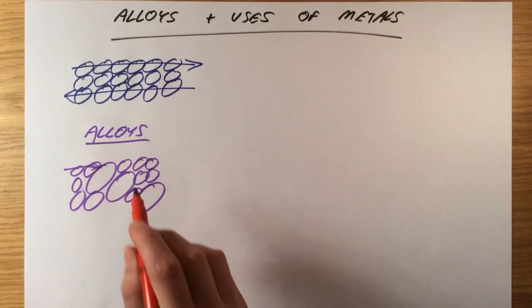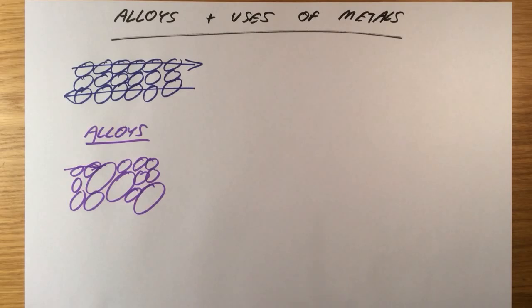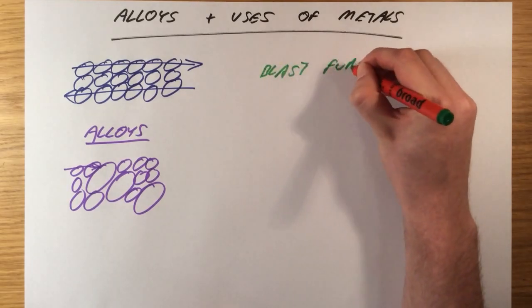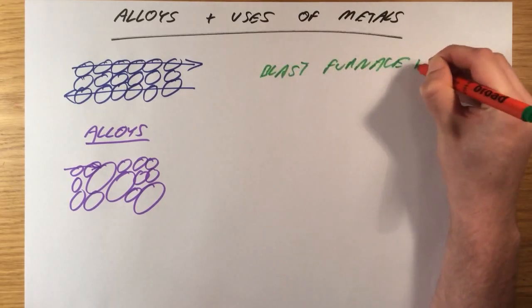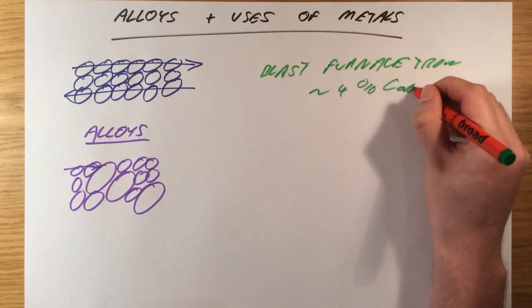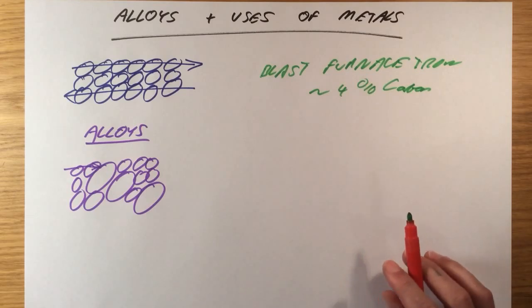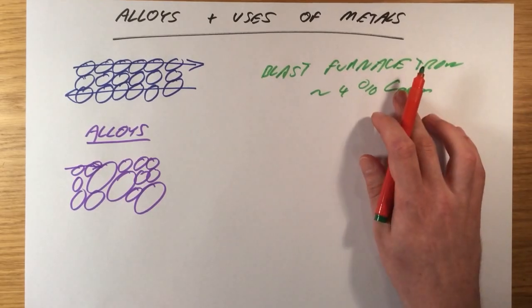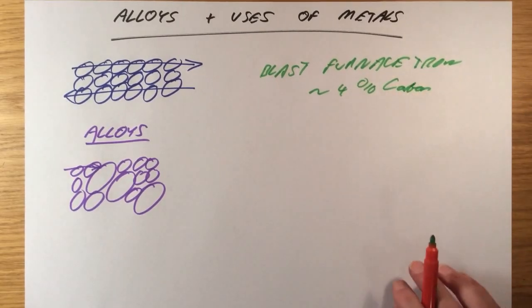One example of this is in iron. The iron we get from a blast furnace contains roughly 4% carbon. This means the blast furnace iron is extremely brittle, it can be smashed extremely easily. So what we need to do first off is remove this carbon, turn it into pure iron and then we can turn it into a range of different alloys.